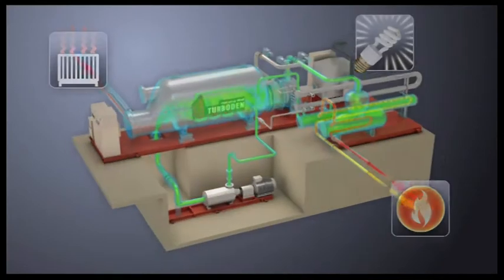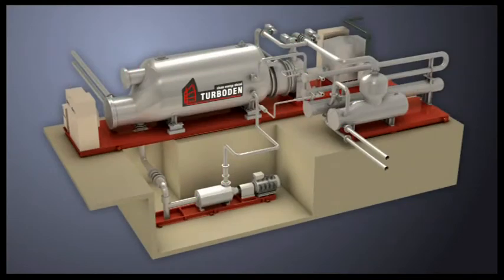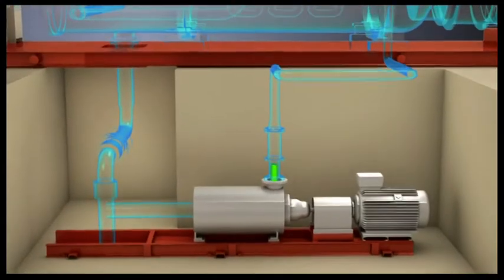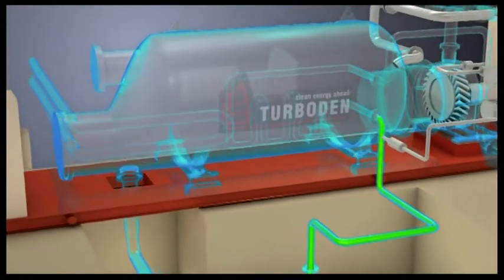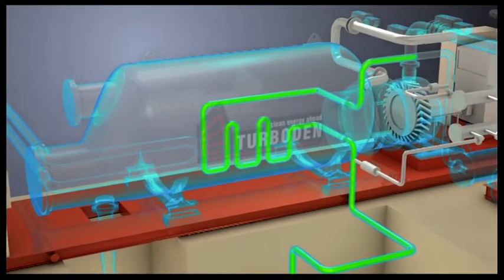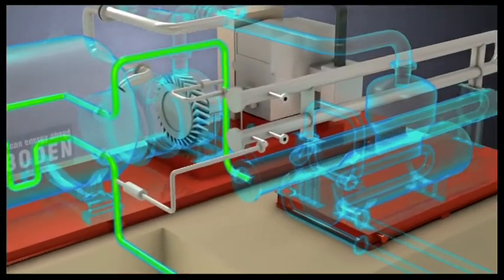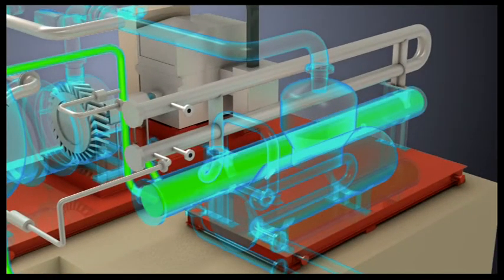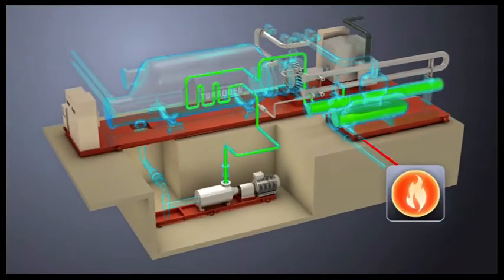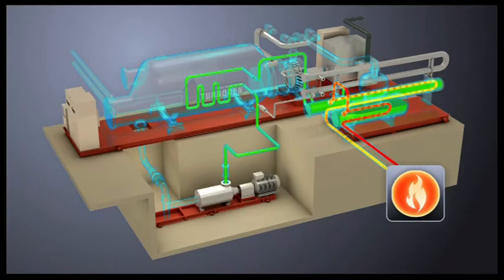Let's take a closer look at how a co-generative ORC Turboden system works. The organic fluid in liquid form is fed into the closed loop through a pump. It then runs through the regenerator coil where it undergoes initial heating. The fluid is then conveyed to the preheater and into the evaporator. At this point, the thermal oil in the boiler increases the fluid's temperature until it reaches evaporation point.